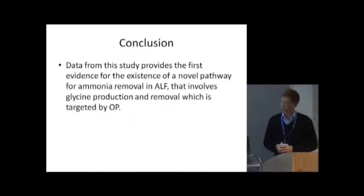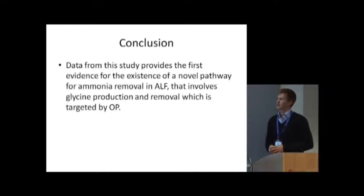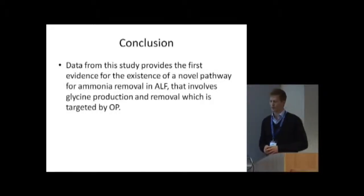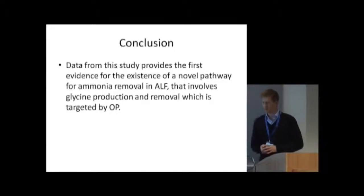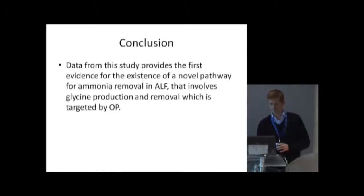To conclude, data from this study provides the first evidence for the existence of a novel pathway for ammonia removal in acute liver failure that involves glycine production and removal, and is targeted by the ornithine phenylacetate treatment.